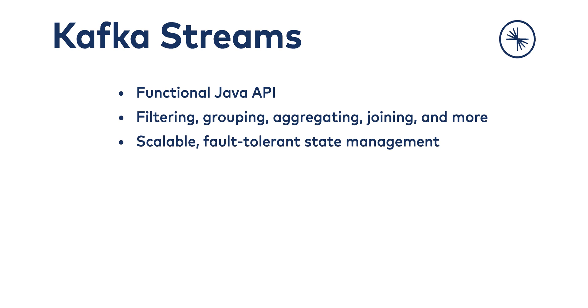Kafka Streams also provides direct support for the potentially large amounts of state that result from doing stream processing computations like these. Just about anything interesting that you're going to do in a consumer is going to be stateful. If you're grouping events in a high throughput topic by a field with lots of unique values and computing a rollup over that group every hour, every five minutes, every whatever, you're going to use potentially a lot of memory. You don't want to be in the business of managing that, thinking about fault tolerance in terms of that memory, or persisting it somewhere else. You'd much rather someone do that for you.